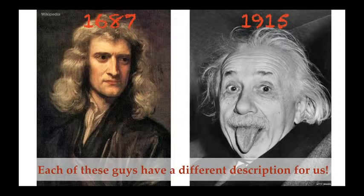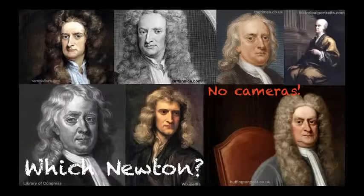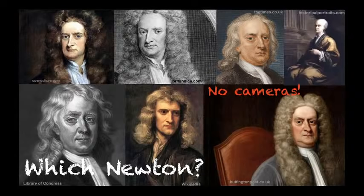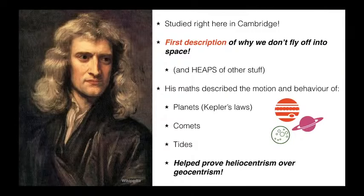You'll notice that the picture of Newton on the left is actually a painting, whereas we have a photo of Einstein on the right. The truth is that we're not really sure what Newton really looked like. If you go ahead and Google Isaac Newton, you'll come up with a bunch of different paintings and they all look like completely different people — because there were no cameras back when Newton lived, so each portrait was done by a different person. Newton actually studied right here in Cambridge, and he gave us the first ever description of why we don't all fly off the Earth into space.